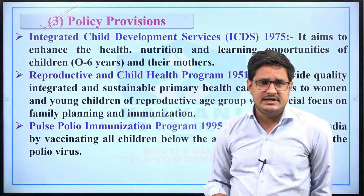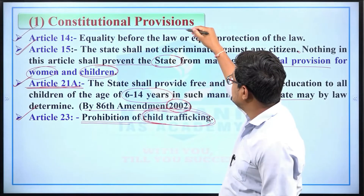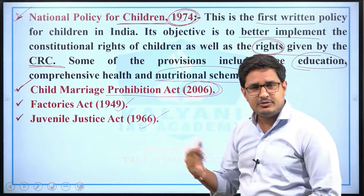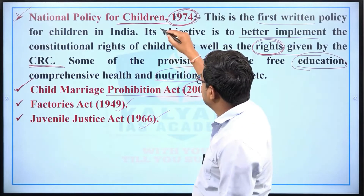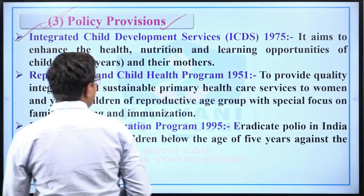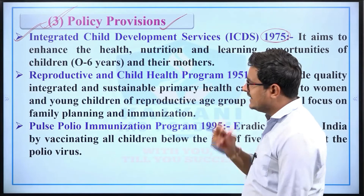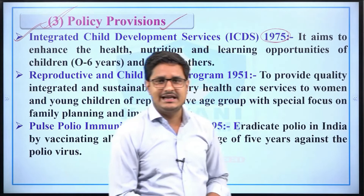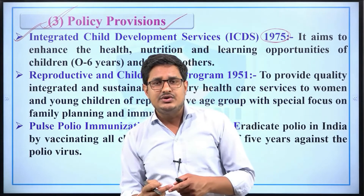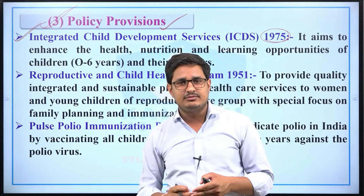Now we will study policy provisions for the welfare of children. From this section, five-marker questions can be directly asked in the exam, such as: what are the constitutional provisions, statutory provisions, or policy provisions for the welfare of children? The first policy is the Integrated Child Development Services (ICDS), started in 1975. Through this scheme, nutrition among children will be promoted, early schooling will be improved, and child care facilities will also be provided. Under this scheme, through Anganwadi centres, ready-to-eat food is provided to children.